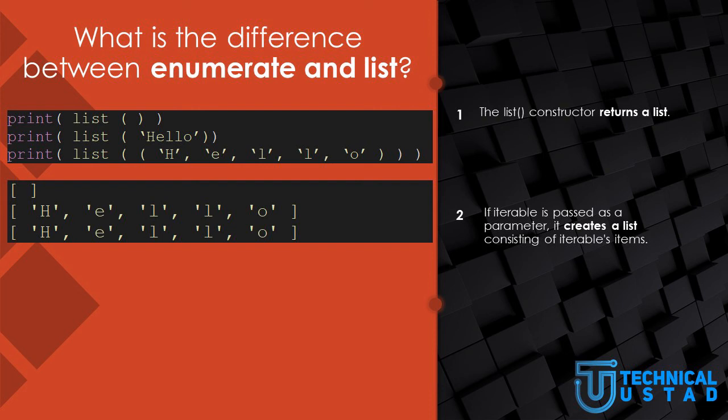What is the difference between Enumerate and List? The list constructor returns a list. If no parameters are passed, it returns an empty list. If an iterable is passed as a parameter, it creates a list consisting of the iterable's items. In this example, we print an empty list, then a list that contains 'hello', and then a list that contains each character of 'hello' individually. The list function creates an array containing each character from the passed string as an element. The same result is obtained when passing a tuple as an argument — it will be converted to an array.